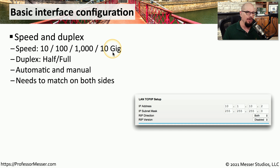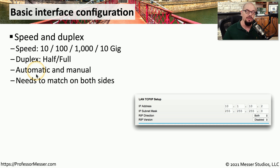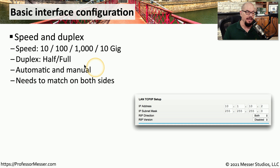Commonly, we would also see a duplex configuration where the duplex would be set to either half or full. Many times this configuration is set to be automatic, meaning that both devices will negotiate with each other and find the best option for both speed and duplex. Some organizations prefer to manually set these, and will configure the speed and duplex within the switch and the device configuration itself.